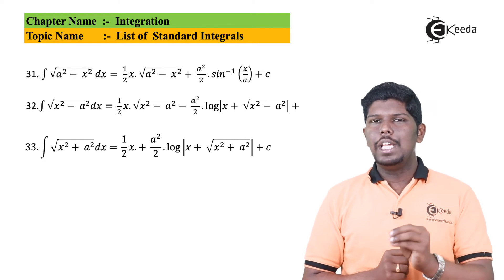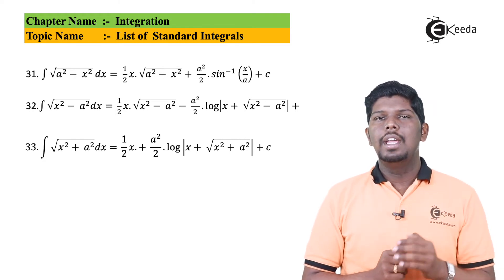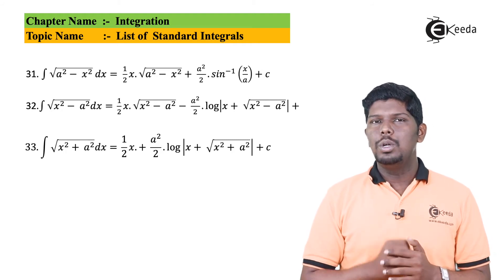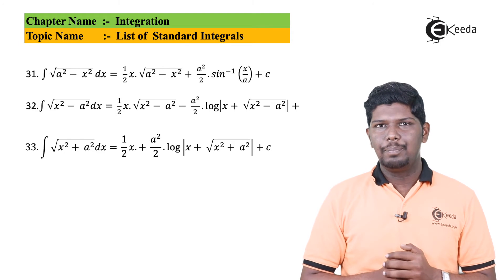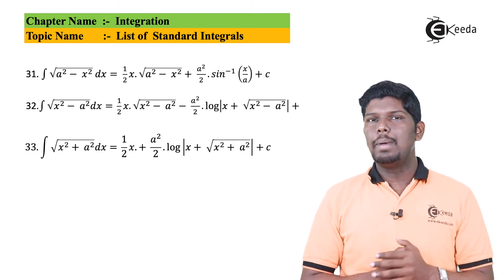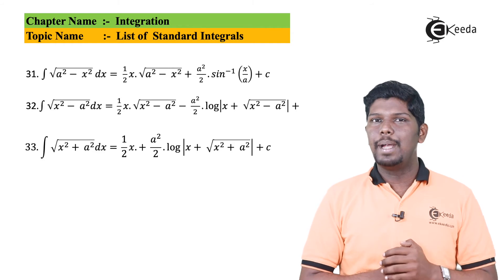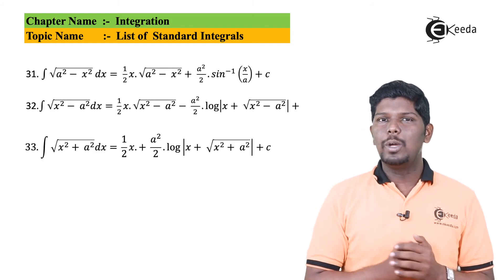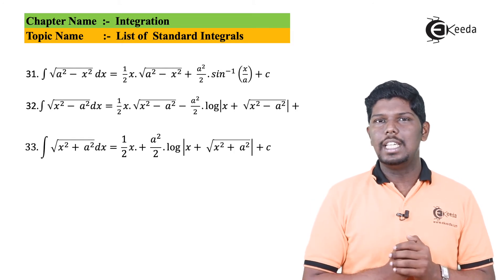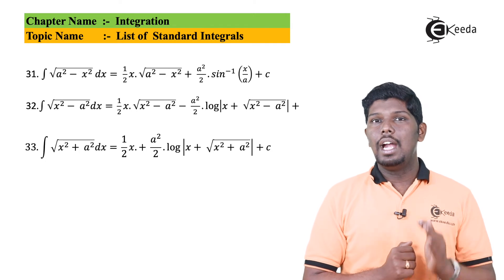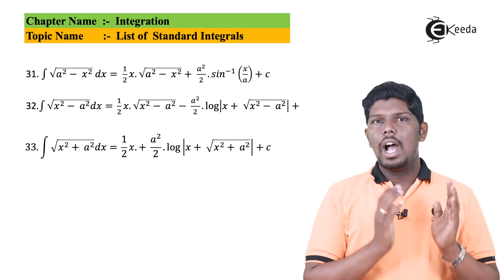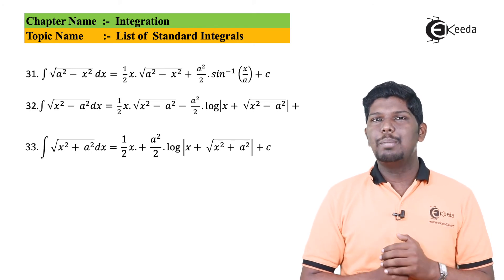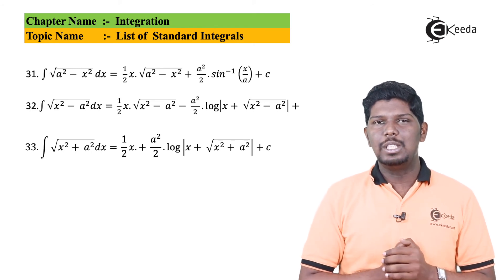So: integral of under root of a squared minus x squared gives x by 2 times under root of a squared minus x squared, plus a squared by 2 times sin inverse x by a, plus c. Integral of under root of x squared minus a squared gives x by 2 times under root x squared minus a squared, minus a squared by 2 times log of x plus under root x squared minus a squared, plus c. Integral of under root x squared plus a squared gives x by 2 times under root x squared plus a squared, plus a squared by 2 times log of x plus under root x squared plus a squared, plus c.